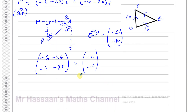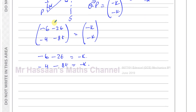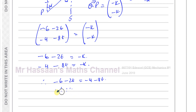Solving the equation −6 − 2T = −4 − 8T: rearranging to keep T terms positive gives −2T + 8T = −4 + 6, so 6T = 2, therefore T = 1/3 hours. They didn't ask for the time — they asked for the distance between the ships — so now we find the vector from Q to P.